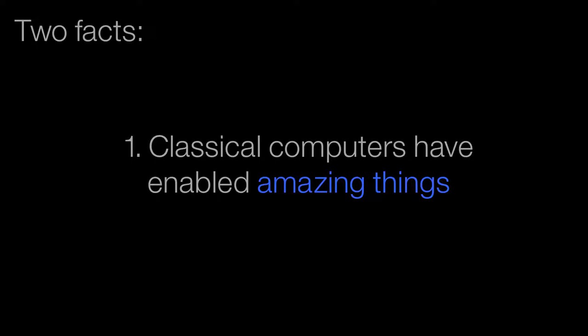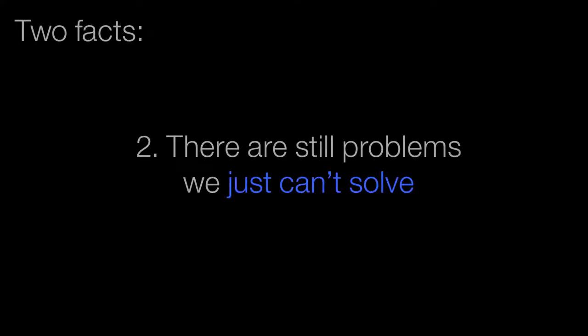I want to start with two facts. Fact number one: classical computers have enabled amazing things — the internet, flying across the country on a plane, the electronic giraffe outside blaring music. Classical computers have enabled just amazing things, but one of the things we don't often talk about is all the things they can't do. There are so many things they can't. So I want to start with two examples of things classical computers are really bad at. They can solve small versions of these problems, but by the time the problem gets big enough to be interesting, we just run out of computing horsepower.